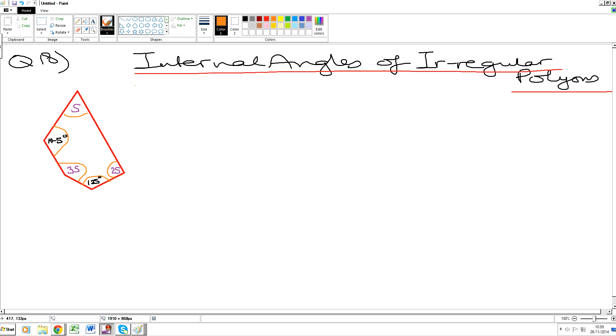Okay, bismillah. Welcome back. Question number 18. The internal angles of an irregular polygon. Now we have a five-sided shape over here. If you look at the shape which we've got here.